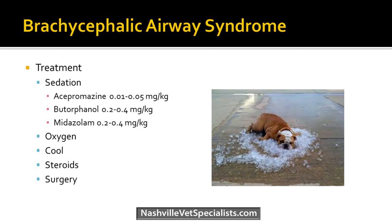Initial treatment for Tank is sedation — TORB and Ace are your friends. Acepromazine at 0.01 mg/kg and butorphanol at 0.2 mg/kg is where I'd start, giving one first and then the other if needed — don't give both at the same time. Sometimes midazolam can help take the edge off too. Oxygen and cooling — cold water blankets, fans — anything to calm them down. Steroids help with airway inflammation. Ultimately these dogs benefit from surgery to correct their airway, but we prefer to get them out of crisis first and have them come back when calm. Recommending airway surgery earlier in life, like at the time of spay or neuter, would be beneficial.